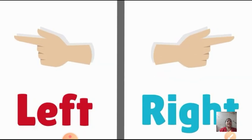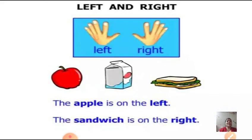Left and right. I hope children you all must have understood what is left and right. Here we can see an apple, a sandwich, and a milk bag. The apple is on the left hand side, and the sandwich is on the right hand side. And in the middle we can see a milk bag.